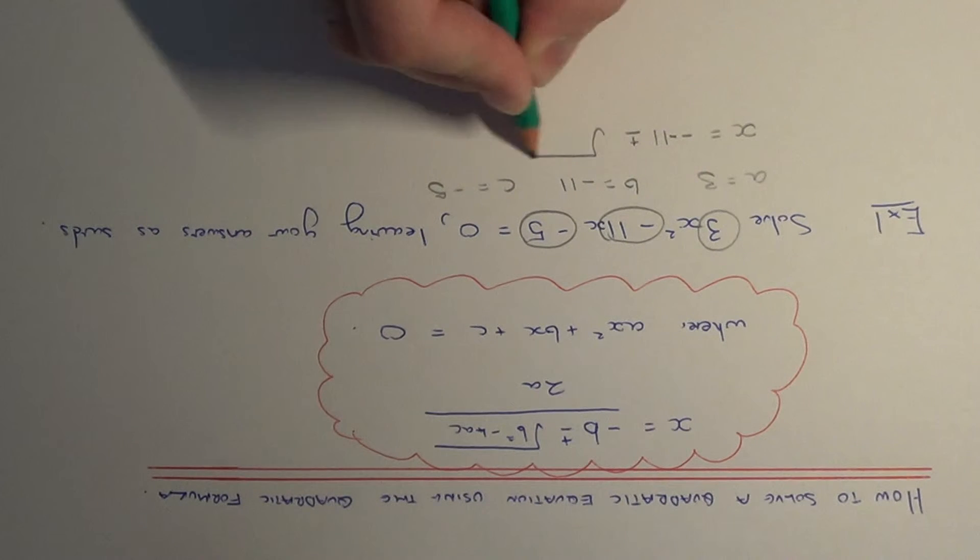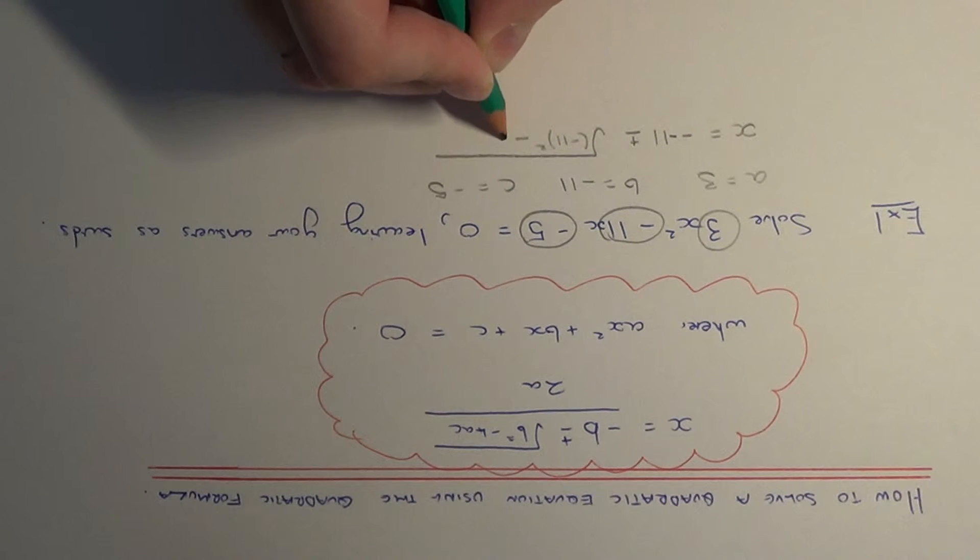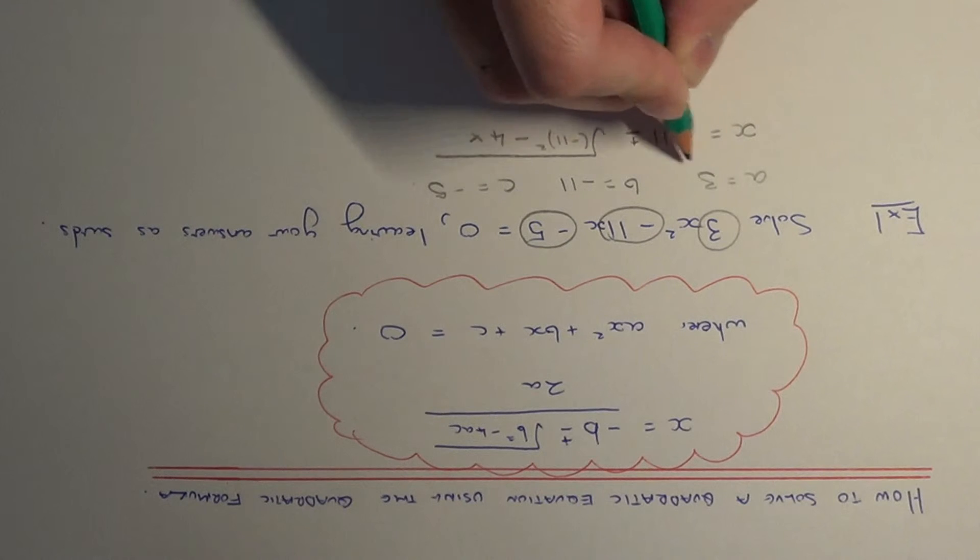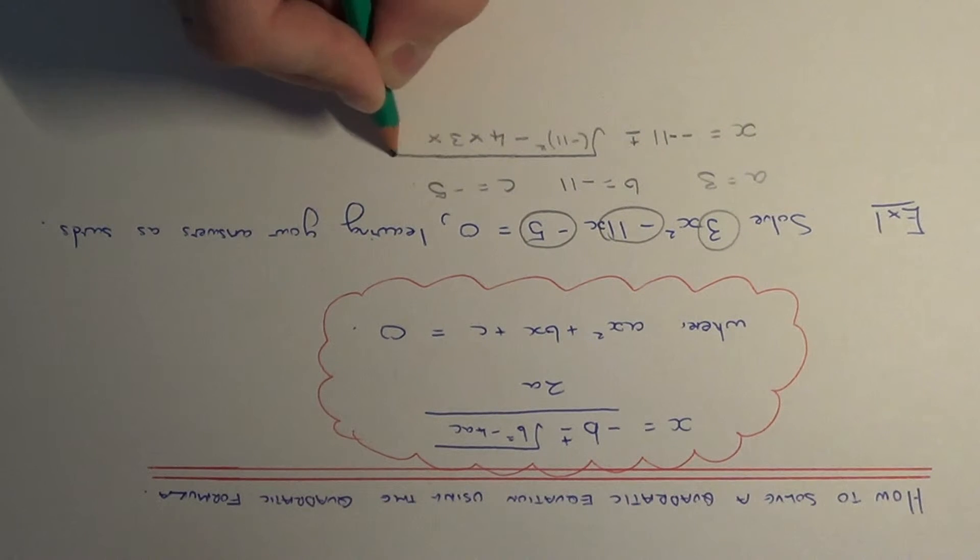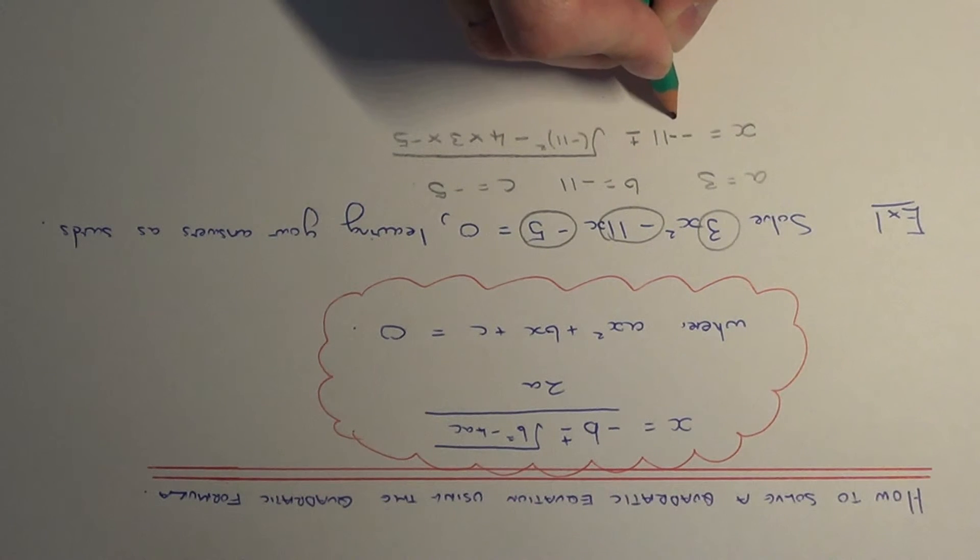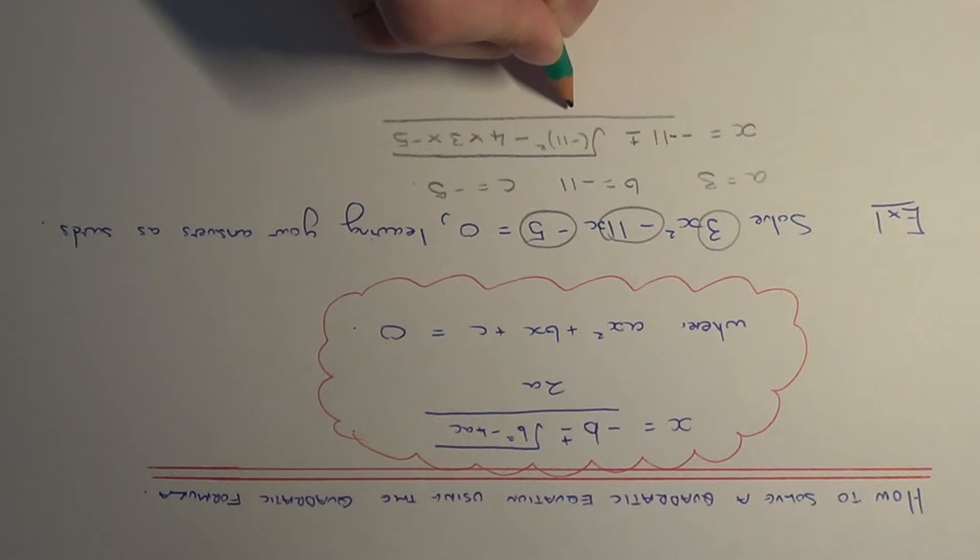minus the square root of b squared, so it's minus 11 squared minus 4 times a times c, all divided by 2 times a, which is 2 times 3.